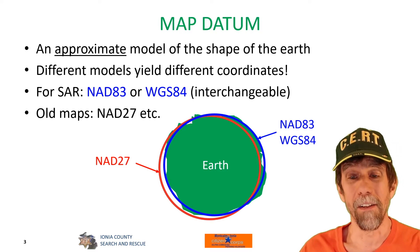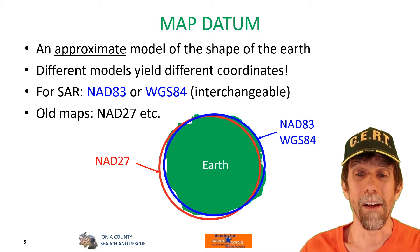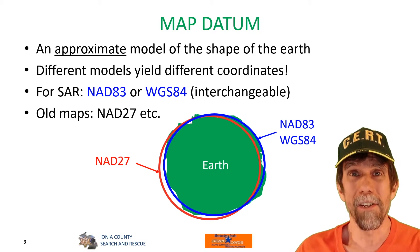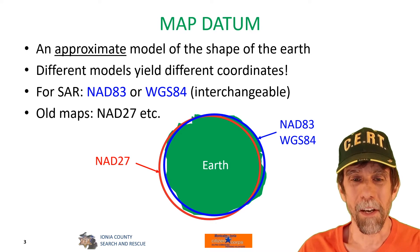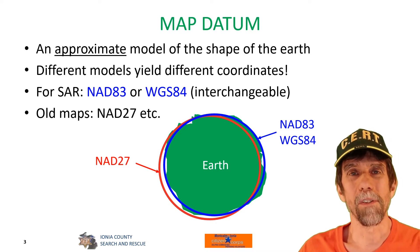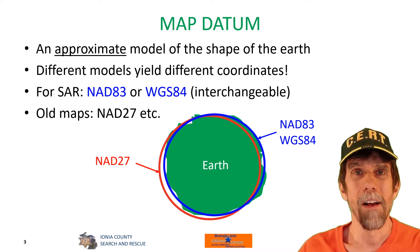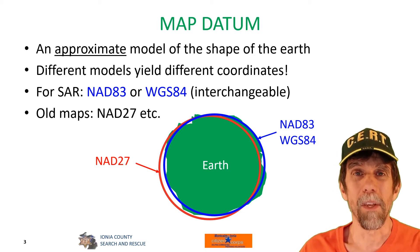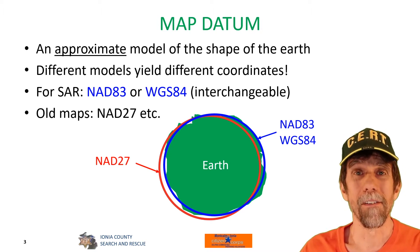On older maps you might find another datum in use such as NAD 27, and that's substantially different than the newer ones. It doesn't mean you can't use the map — you just have to understand that the coordinates are different and you may need to adjust your GPS to work in the datum of the map that you have. As illustrated, because these two systems depict different mathematical shapes, a given point on the earth can be quite far away in terms of its coordinates from one datum to another.